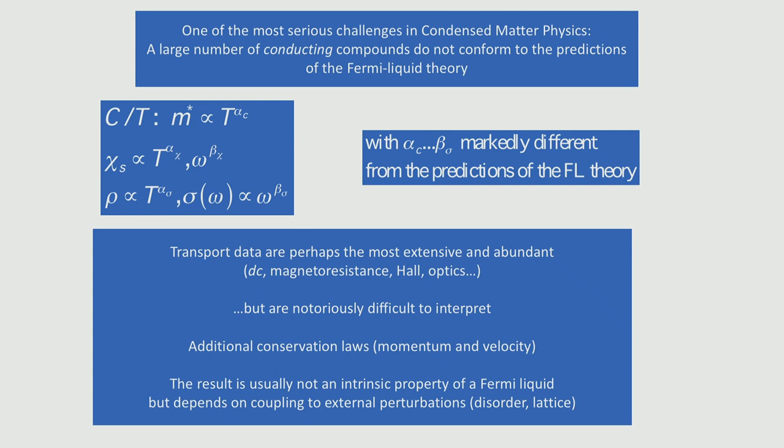Sometimes we cannot get information about the intrinsic interaction in the system, because we have to worry about additional conservation laws - momentum and velocity - and also about things such as disorder, lattice, phonons, et cetera. The outcome of your theory is usually not an intrinsic property of the Fermi liquid, but rather shows how your Fermi liquid or non-Fermi liquid couples to reservoirs which sink energy and momentum.